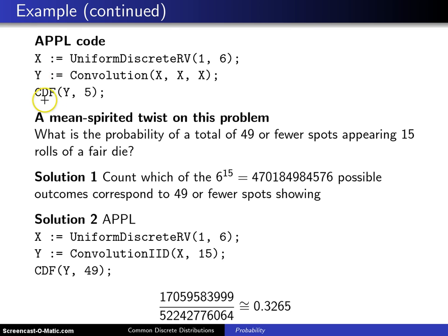Finally, if you want the CDF of Y evaluated at five, that'll give you the probability of a total number of spots being five or fewer, and that will return 10 divided by 216, which in lowest terms will be 5 divided by 108.